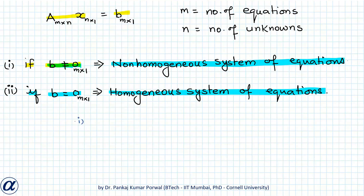The first sub-case is where the number of equations is equal to the number of unknowns. The second is where the number of equations is less than the number of unknowns — such a system is called an under-determined system of equations.